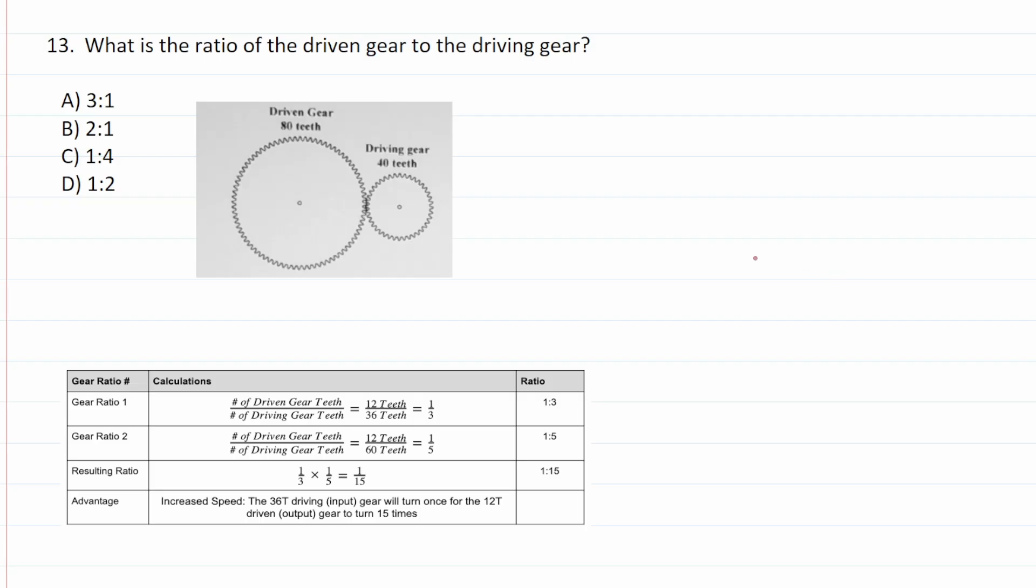Number 13 says what is the ratio of the driven gear to the driving gear? So don't pay attention to any of this except for this formula. That's what we need. So we're going to do the number of driven gear teeth. We can see that that is 80 over the number of driving gear teeth. So we have 40 driving gear teeth. And this gives us our so-called gear ratio. Cross out these corresponding zeros, of course. 4 and 8 have a common factor of 4. So let's reduce this by 4. 8 divided by 4 is going to be 2. 4 divided by 4 is 1. So their gear ratio is 2 to 1. This one is going to be B. It's not 1 to 2 because, again, we're doing the ratio of driven gear to the driving gear.